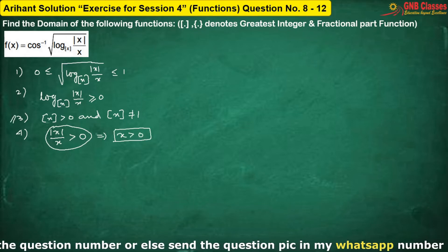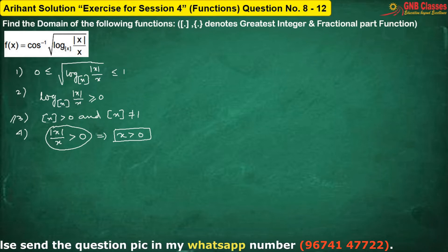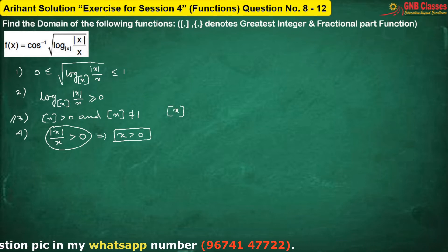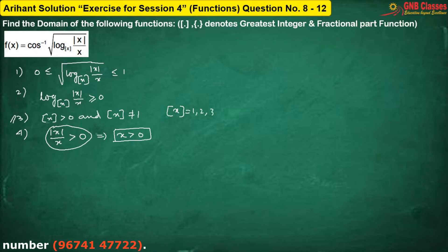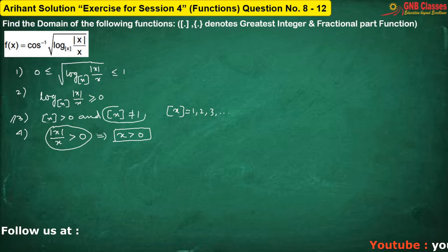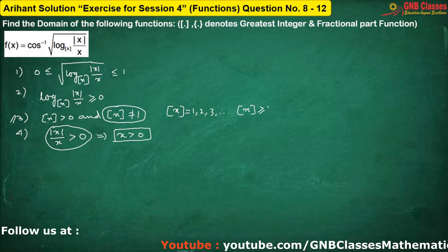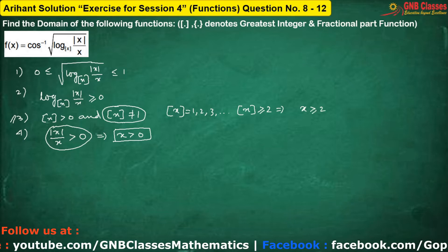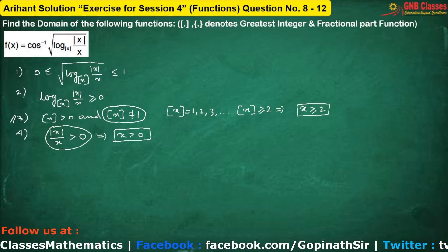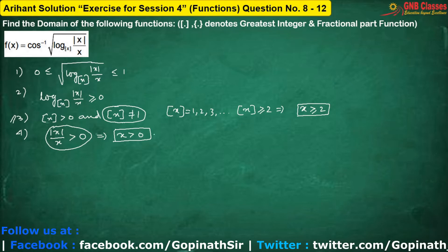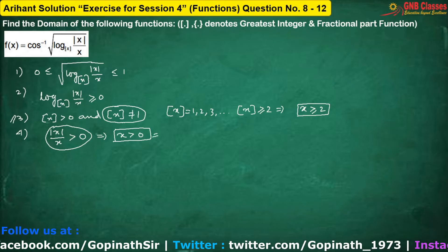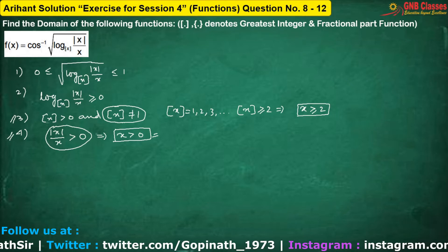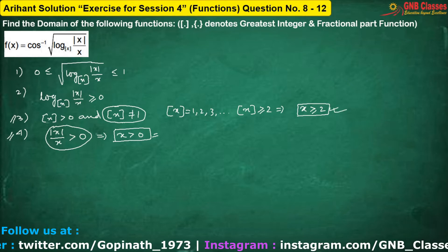From the third condition, we get floor(x) greater than 0, meaning floor(x) can take values 1, 2, 3 and so on. But it has already been said that floor(x) cannot equal 1. Therefore, we can write floor(x) is greater than or equal to 2, which implies x is greater than or equal to 2. So the conditions x ≥ 2 and x > 0 are both satisfied by x ≥ 2.